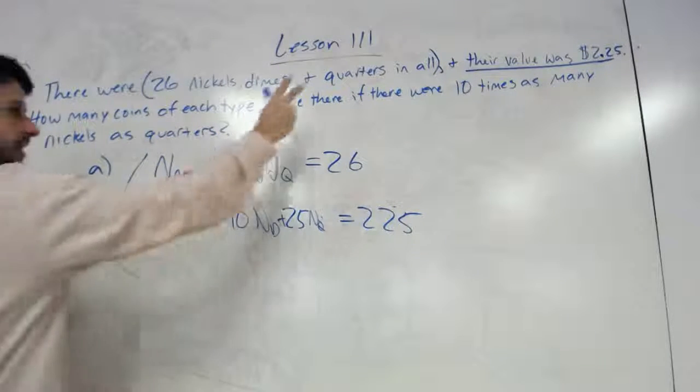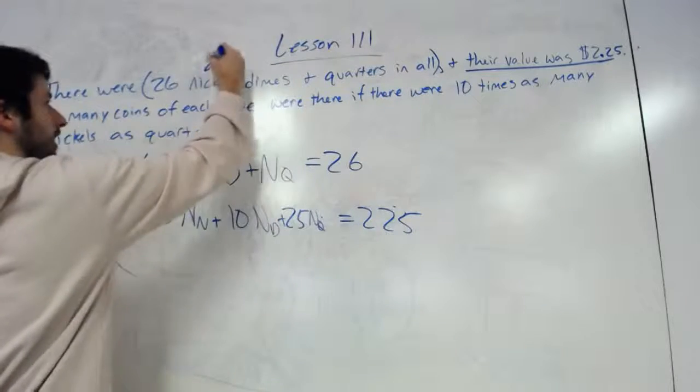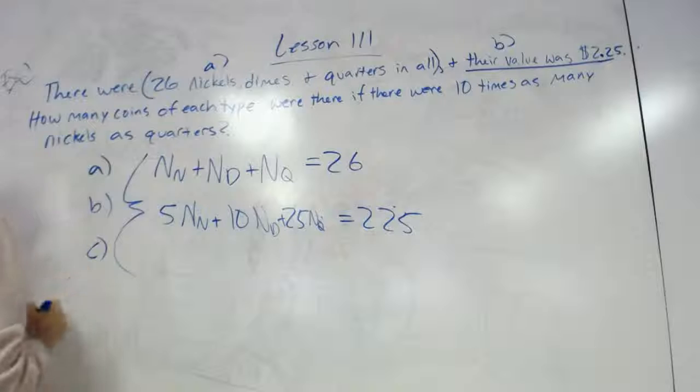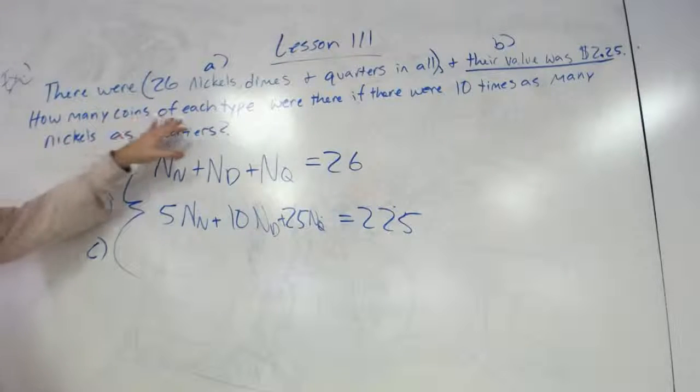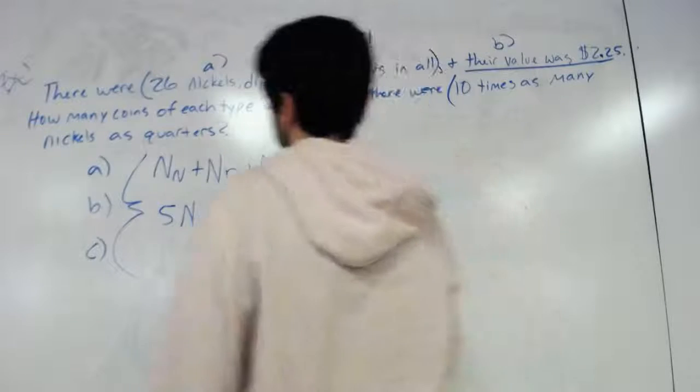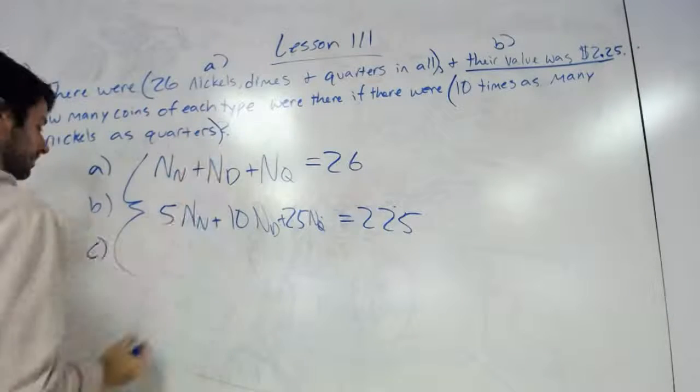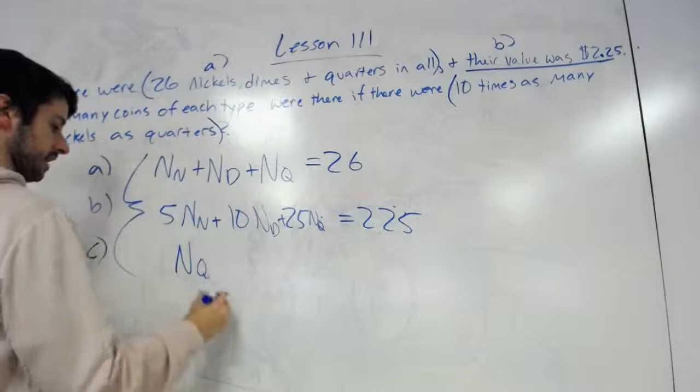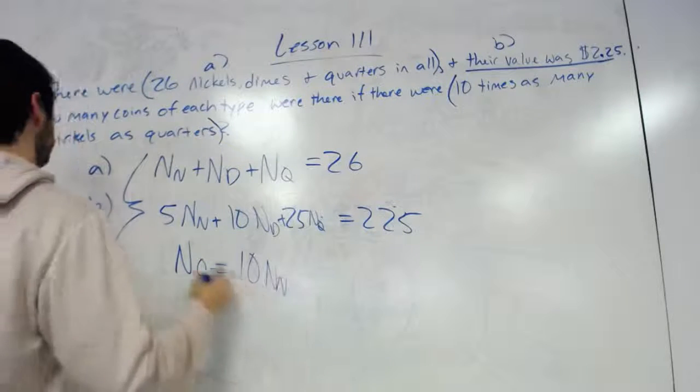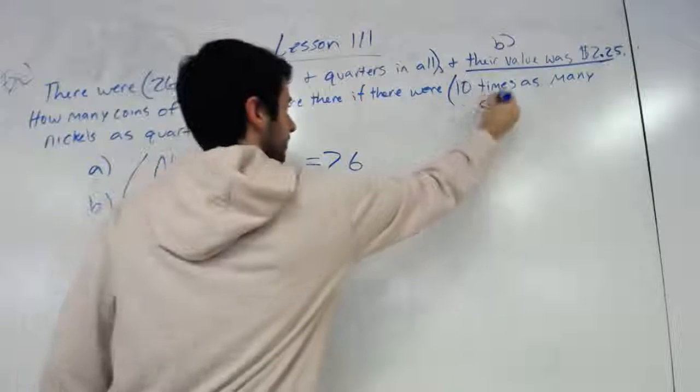So that's the second statement, that's b. And then it gives a third statement. It says how many coins of each type were there if there were 10 times as many nickels as quarters.